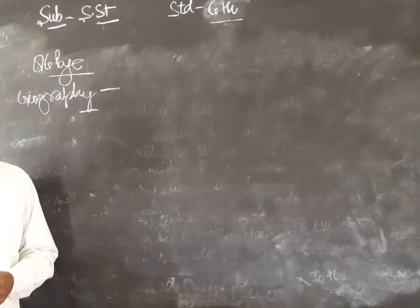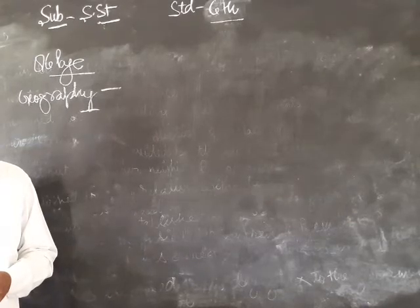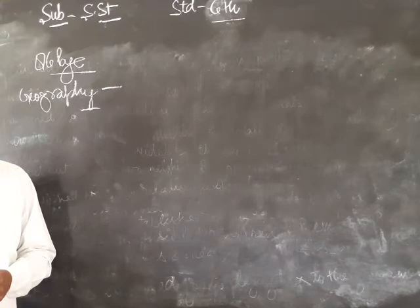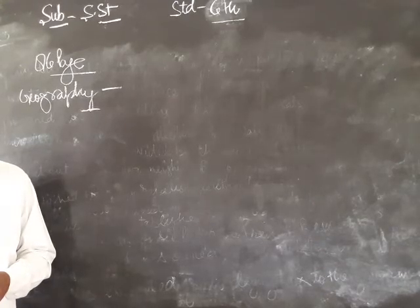While Neptune is the farthest, Jupiter is the largest planet. Mercury is the smallest planet.